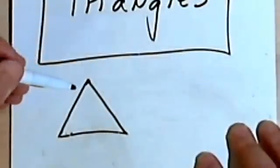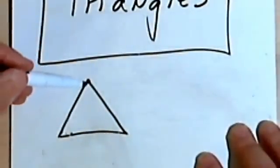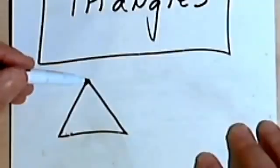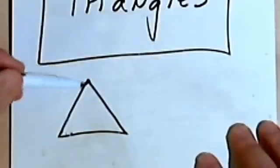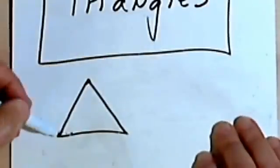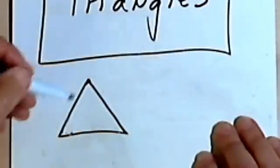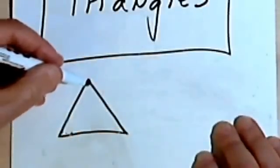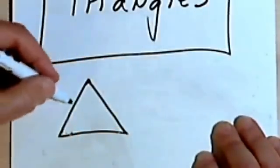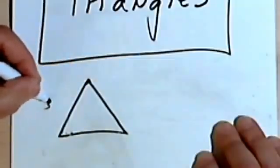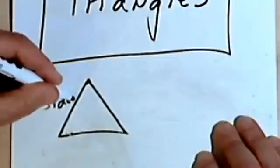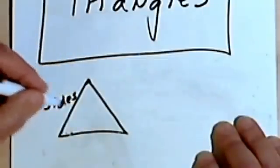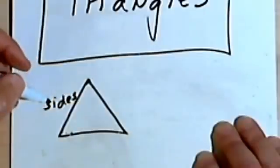As you probably know, a triangle is a figure that's made up of three straight lines that are all connected. So this is a triangle. The straight lines are called sides, and a triangle has three sides.